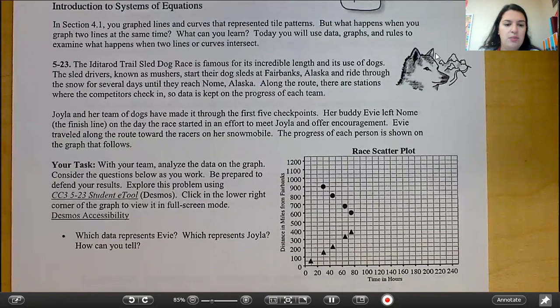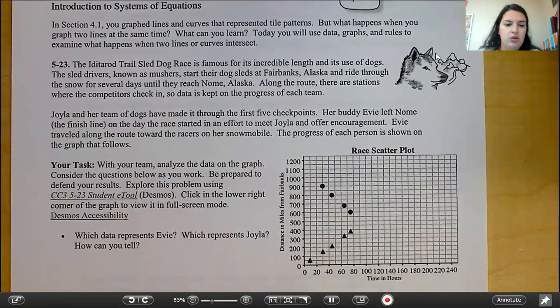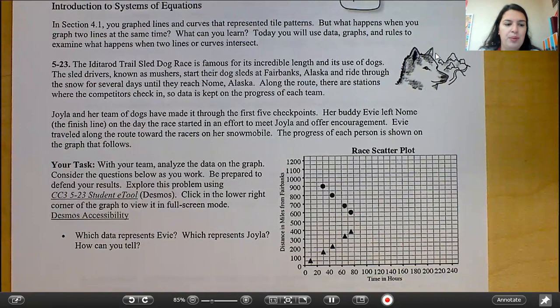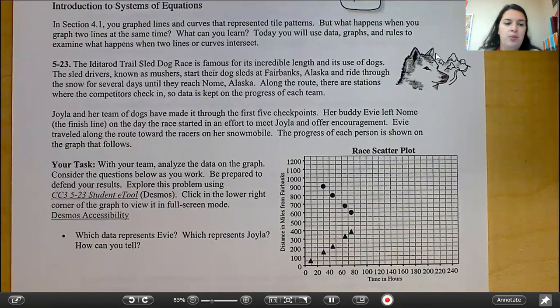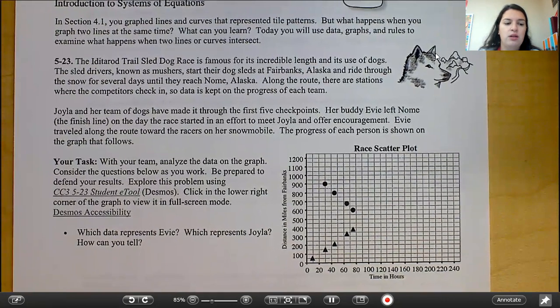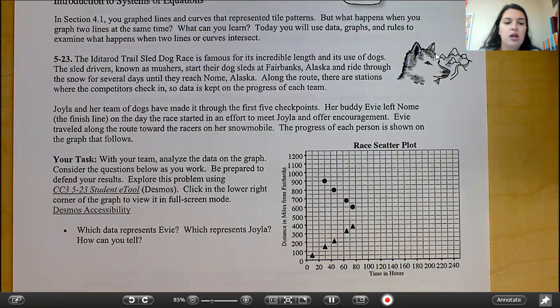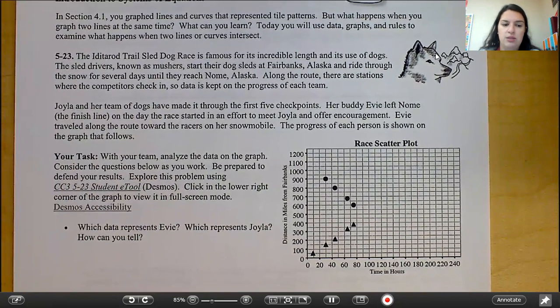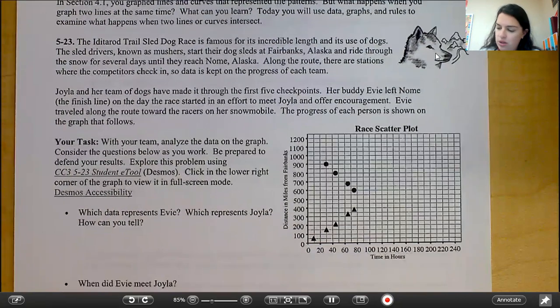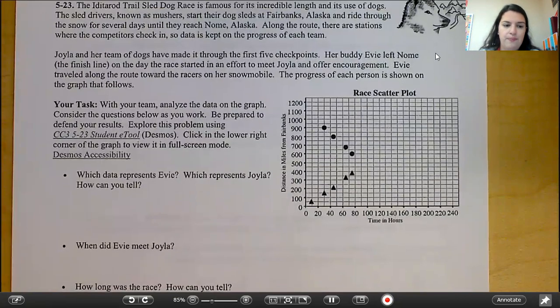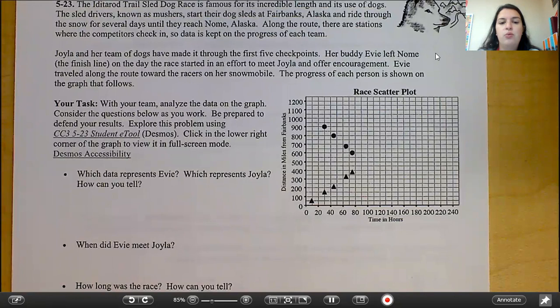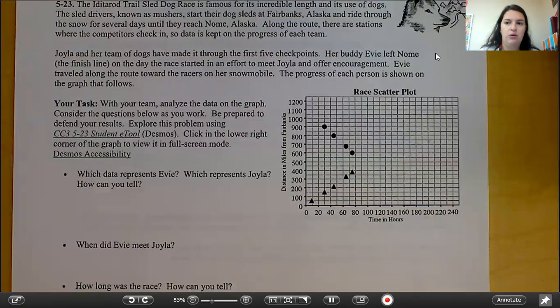Your task. With your team, analyze the data on the graph. Consider the questions below as you work. Be prepared to defend your results. Explore the problem using the CC3-523 student e-tool, Desmos. Click in the lower right corner of the graph to view it in full-screen mode, Desmos accessibility. So you're going to answer the first bullet point. Which data represents Evie? Which represents Joyla? How can you tell? So go ahead and pause the video and answer that question.